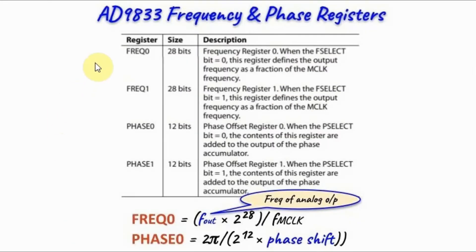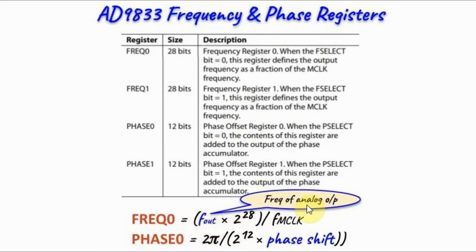The frequency registers are 28 bits wide and the phase shift registers are 12 bits. To calculate the 28-bit frequency value for frequency register 0, we use a formula where F-out is the output frequency and the master clock is 25 MHz. The 12-bit phase shift is given by a separate equation.